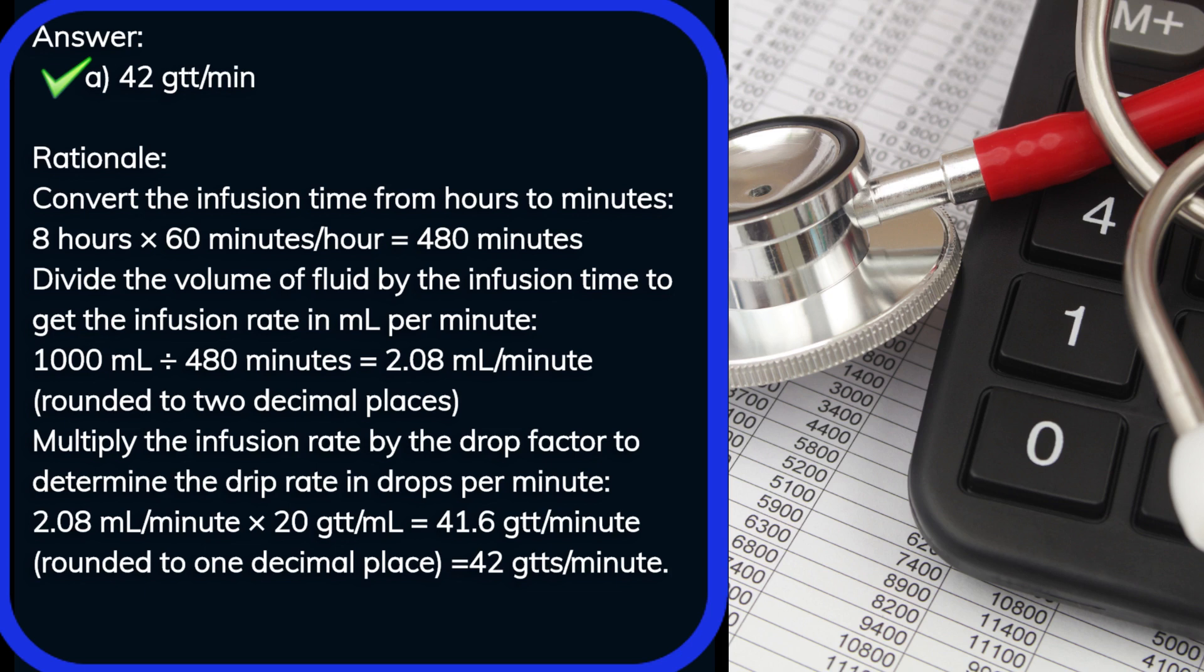Divide the volume of fluid by the infusion time to get the infusion rate in milliliters per minute. 1,000 milliliters divided by 480 minutes equals 2.08 milliliters per minute, rounded to two decimal places.